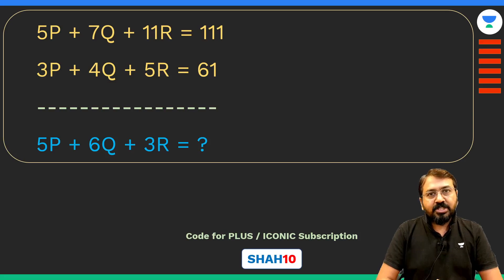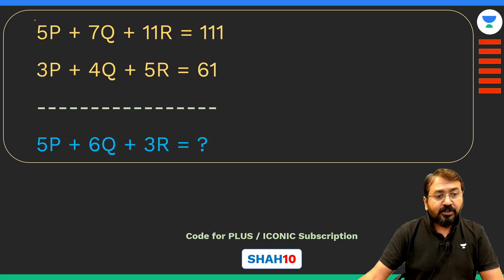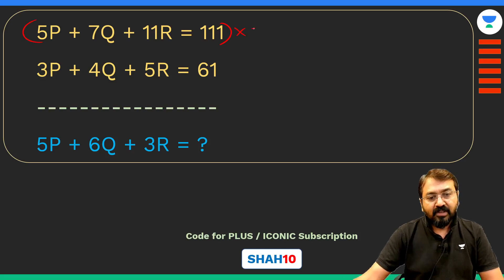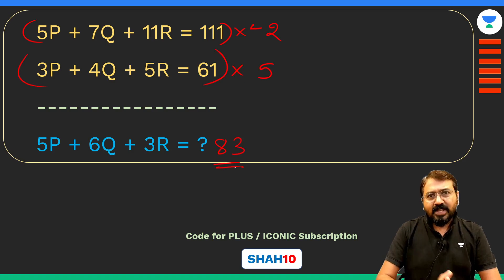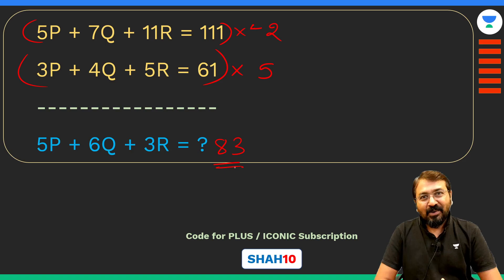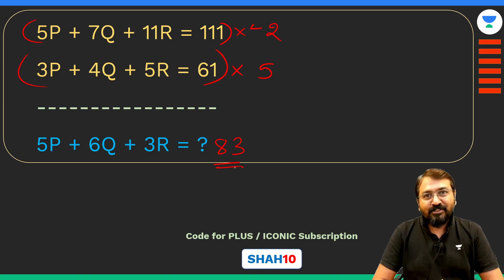The solution to this equation can be obtained by multiplying the first equation by minus 2 and the second equation by 5, and just by adding them. You will get the answer as 83. Isn't this very simple? Obviously not, because to get this multiplying factor you will have to do lots of trial and error, and chances are very high that you may never be able to reach this multiplying factor.